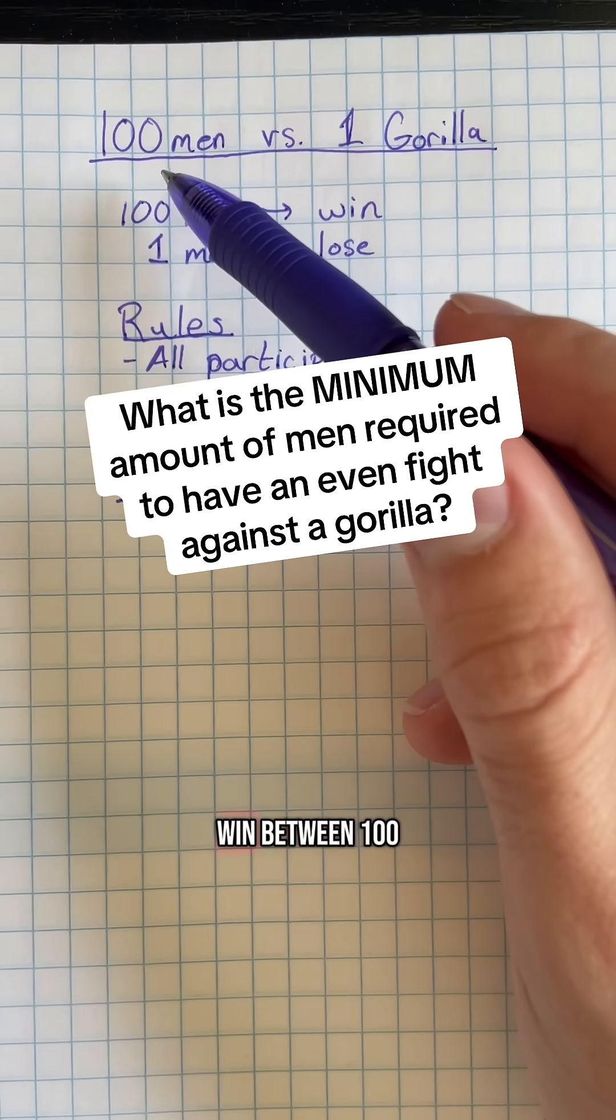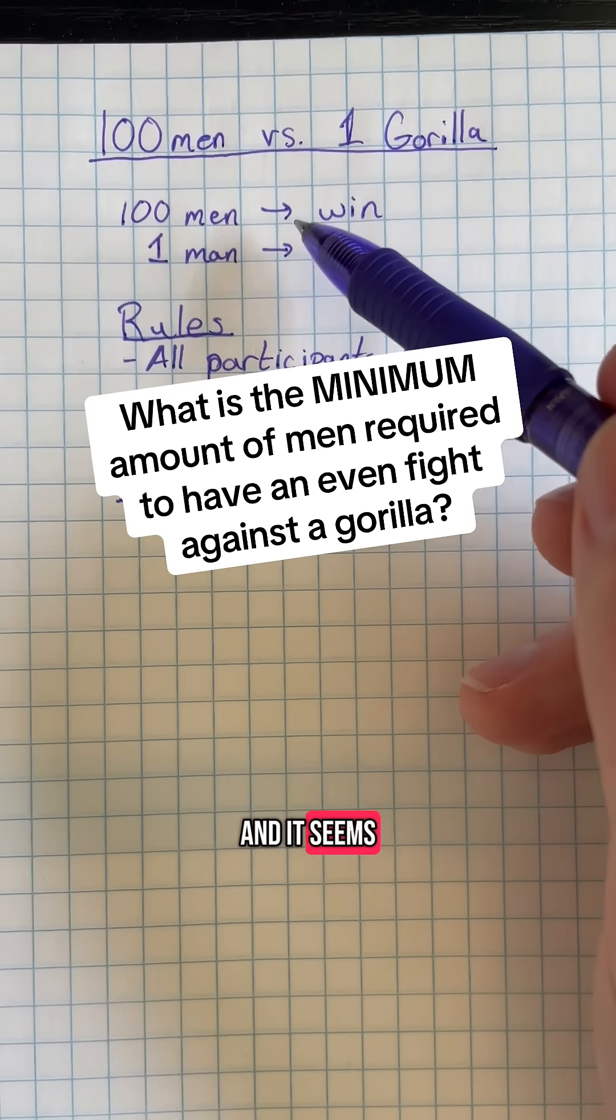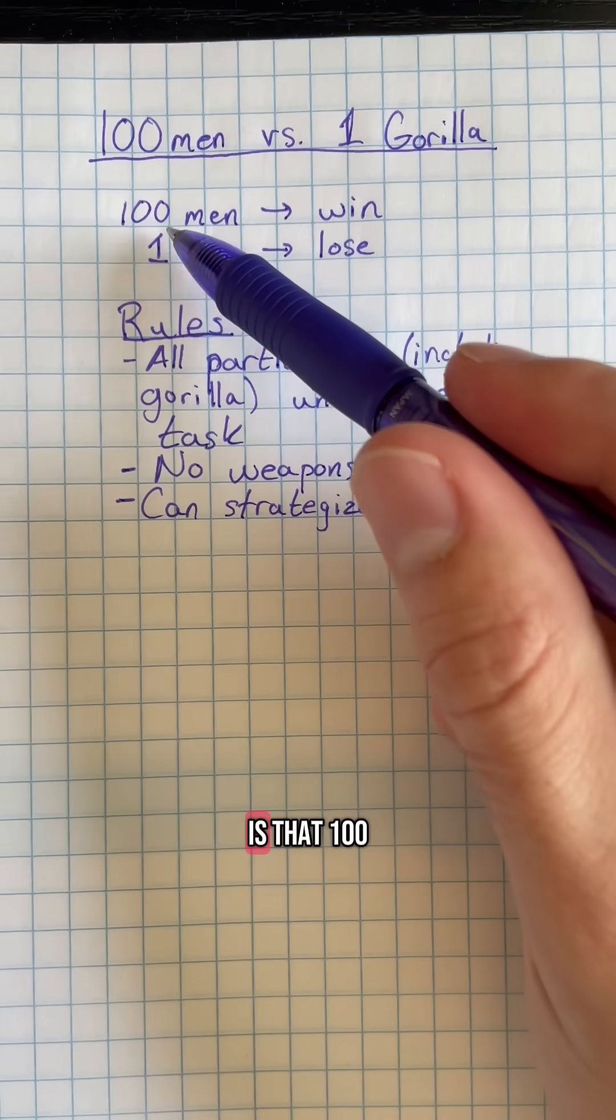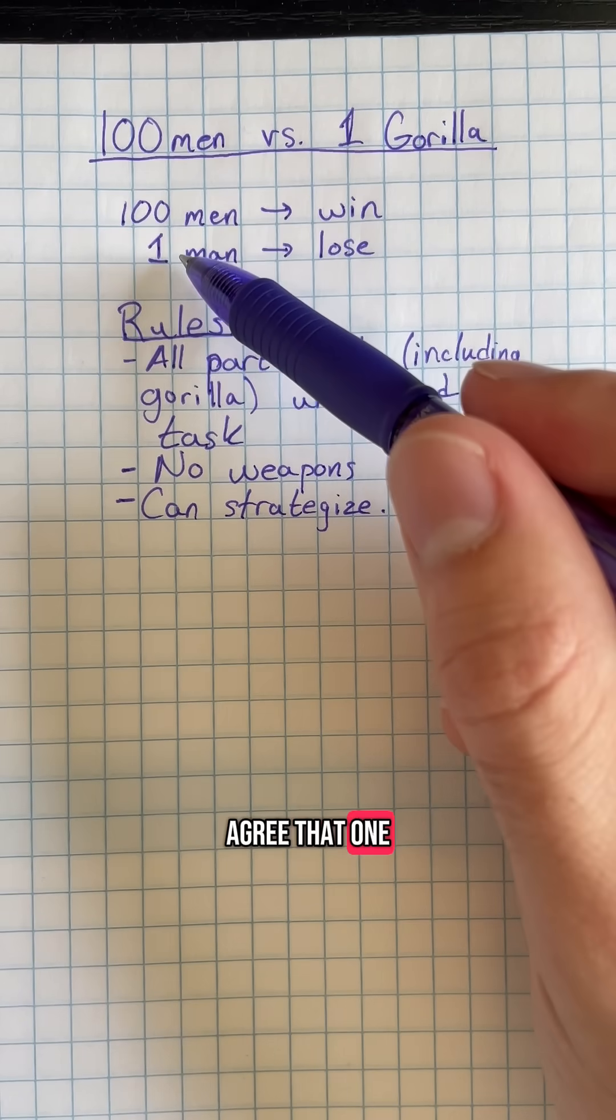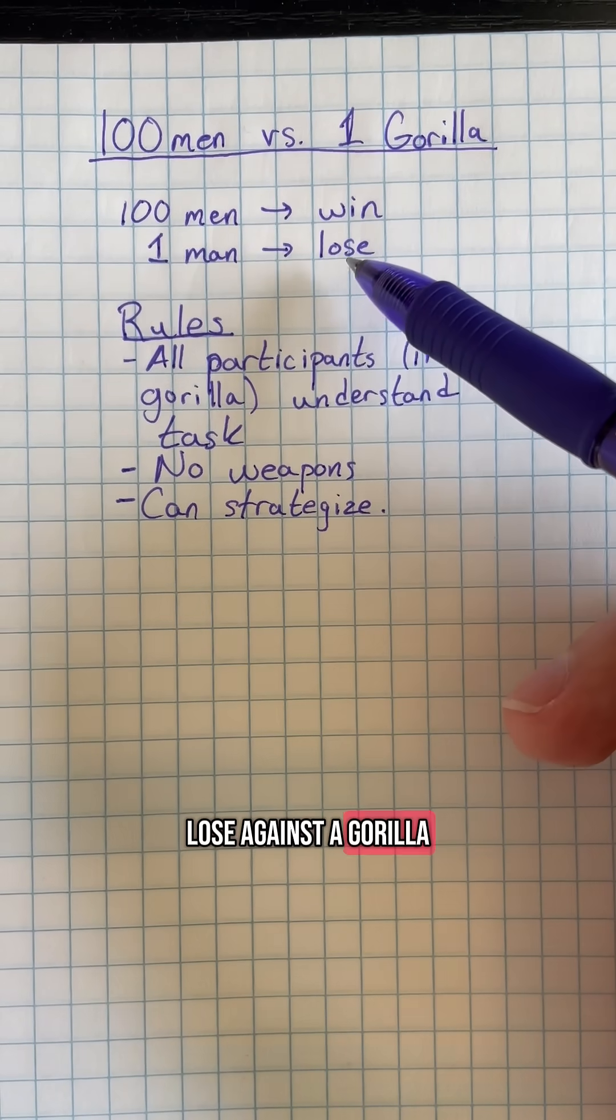There has been much discussion over who would win between 100 men and one gorilla, and it seems that the predominant opinion right now is that 100 men would clearly win. But I think most people would agree that one random man would pretty clearly lose against a gorilla.